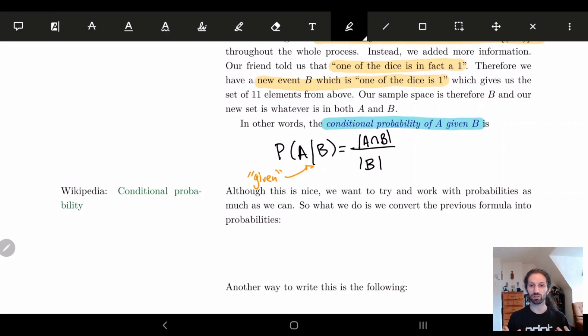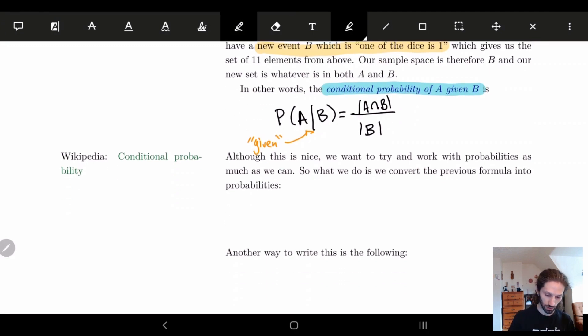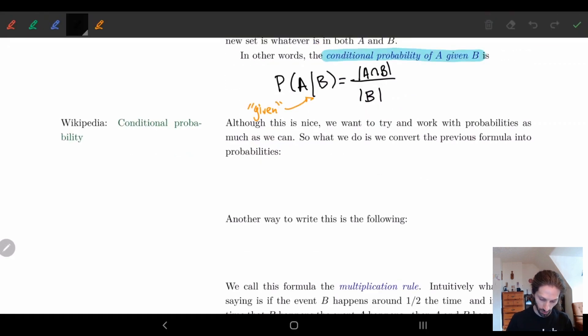But we don't want to necessarily always work with this. We want to really work with these functions, the probability functions. So how do we see this in a probabilistic way? And actually it's not too hard.